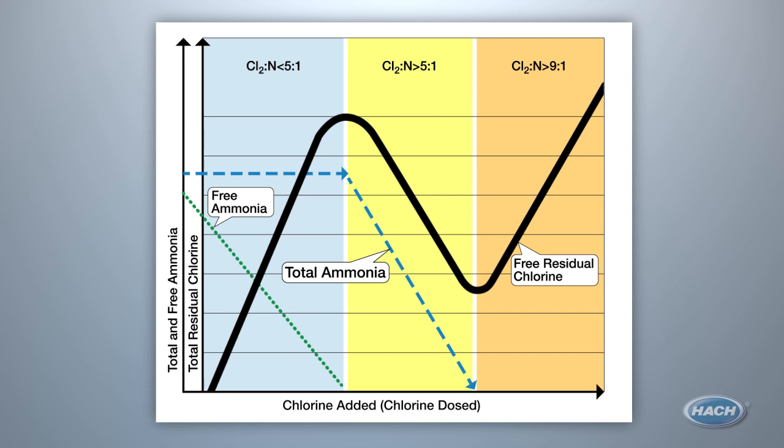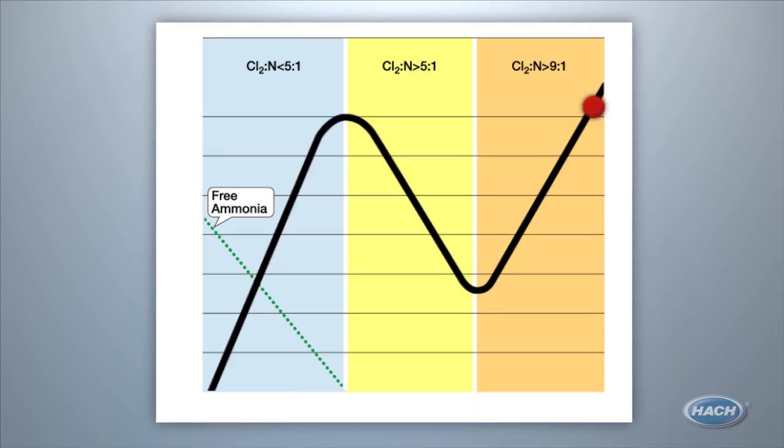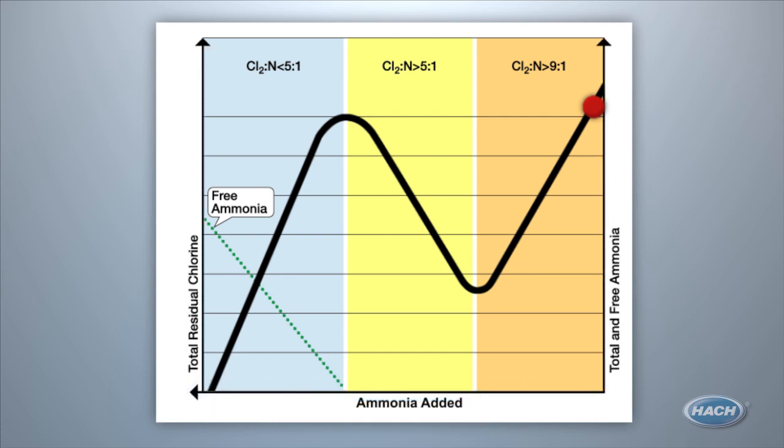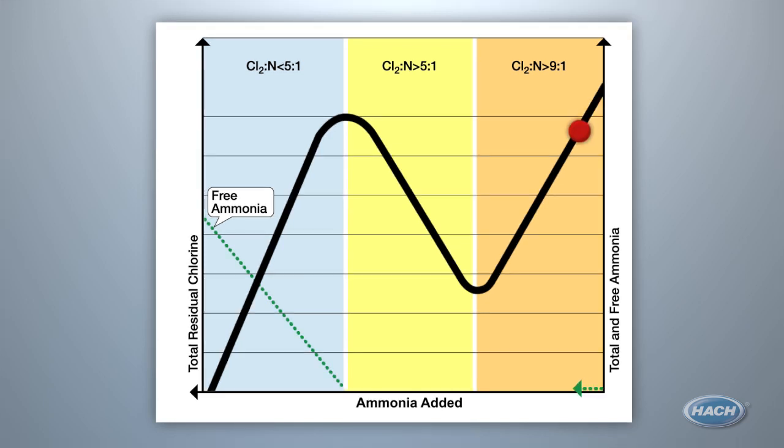So does this change if your utility adds ammonia to water that has already been chlorinated, as many do? The concepts all stay the same. You just move backwards along the line. Ammonia is added to the chlorinated water just prior to entrance into the distribution system. The dose is increased until a small trace of free ammonia is detected, ensuring you are in zone one and maximum monochloramine residual has been reached.